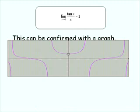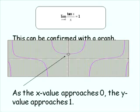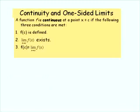This can be confirmed with a graph. As the x value approaches 0, the y value approaches 1, even though there's a hole at x equals 0.